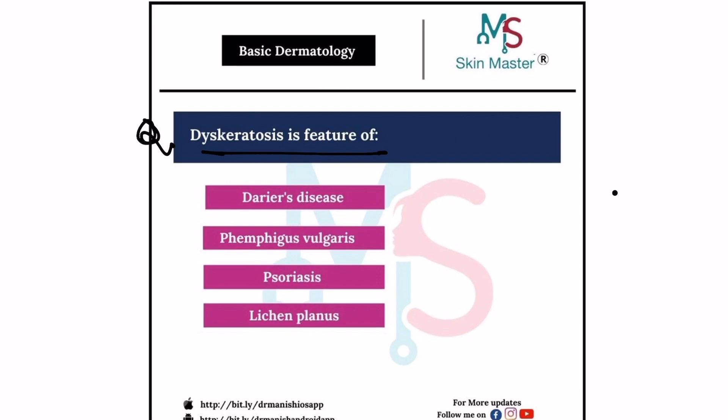We know that dyskeratosis is characteristically seen in Darier's disease. So the answer here is Darier's disease, and it is very simple to remember — D for D. Remember, dyskeratosis is a feature of Darier's disease. Dyskeratosis is abnormal keratinization, and this occurs prematurely within cells below the stratum granulosum.